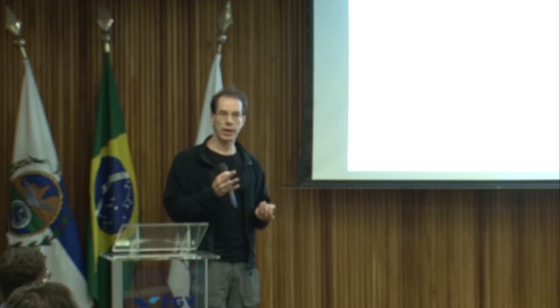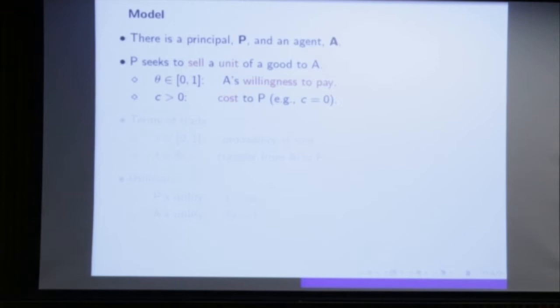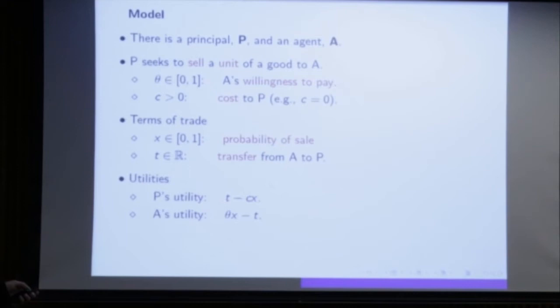The model has a principal and an agent. The principal wants to sell something — the jeans, the shoes — to the agent. Theta is the agent's willingness to pay, between zero and one. The cost of production is C. The terms of trade are very simple: X is the probability of the sale and T is the transfer from agent to principal. The principal's utility is the transfer minus the cost times the probability of supplying the good; the agent's utility is his willingness to pay times X minus what he pays.